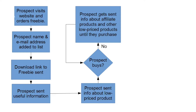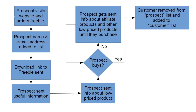Then you get to the point where the prospect actually does buy something. When that happens, the customer — which is what they now are — is removed from the prospect list and added to the customer list. Some mailing systems will do this automatically; on others you'll have to do it manually. It just depends which system you're using.